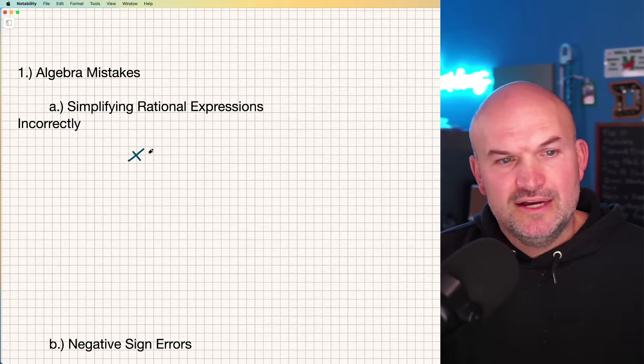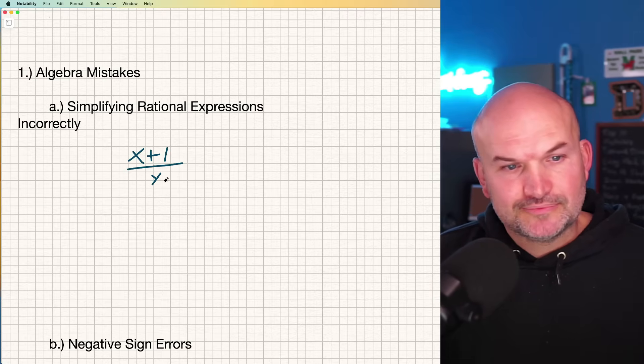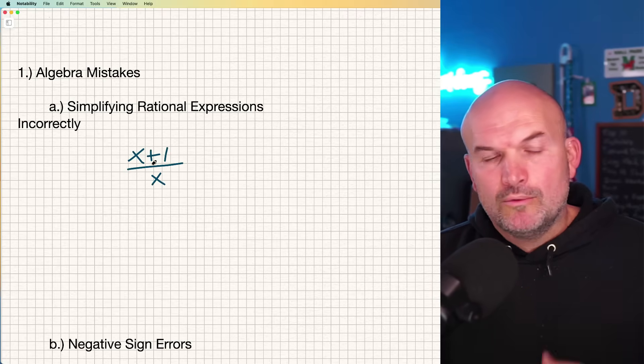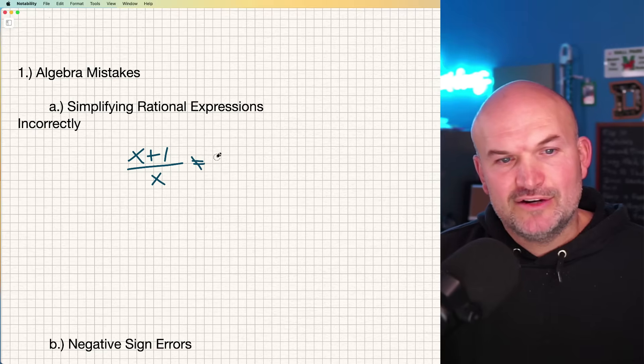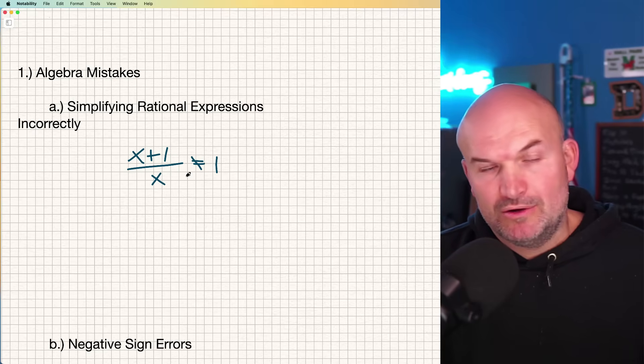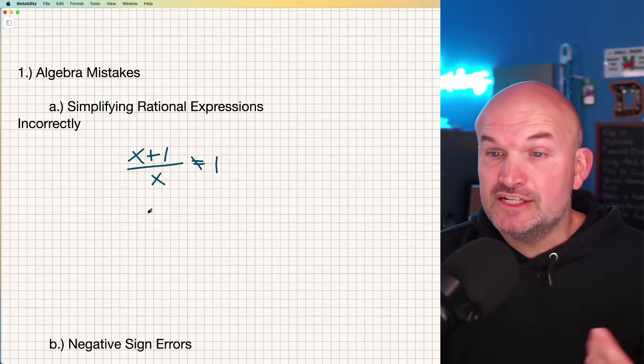For simplifying rational expressions, like if I had X plus one divided by X, we cannot apply the division property. A lot of times students will say, oh, well, these are going to divide out, and therefore this answer equals one. No, ladies and gentlemen, you cannot divide across addition or subtraction.